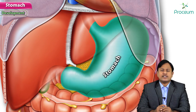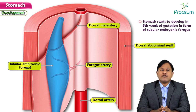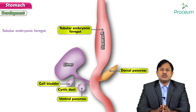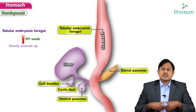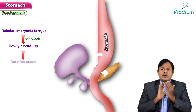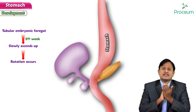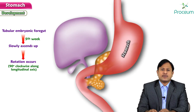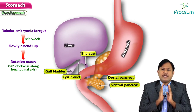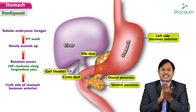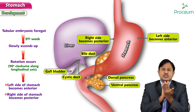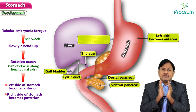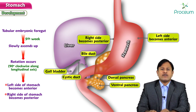Regarding the development of the stomach, it starts to develop in the fifth week of gestation in the form of the tubular embryonic foregut. This tubular embryonic foregut slowly ascends and then rotates — a 90-degree clockwise rotation around the longitudinal axis. This rotation makes the left side face anteriorly and the right side face posteriorly.